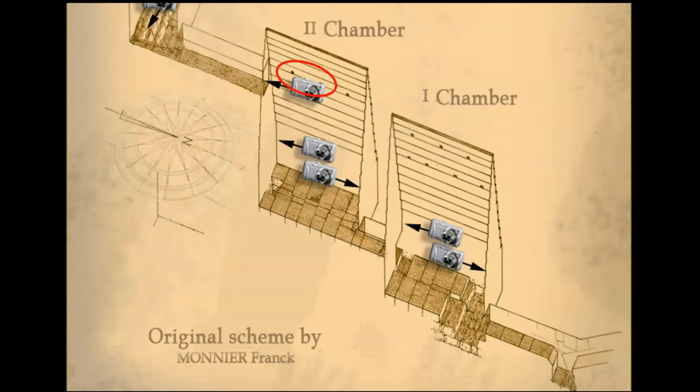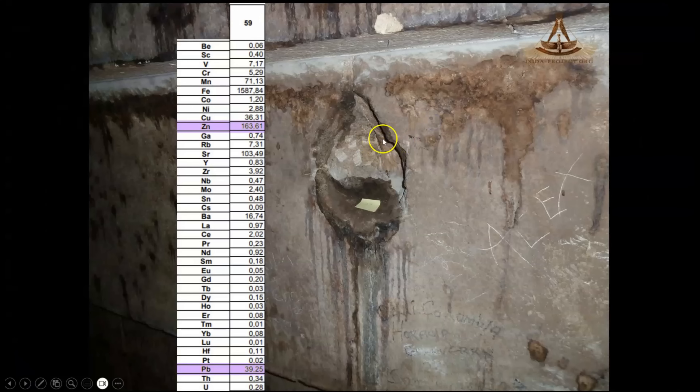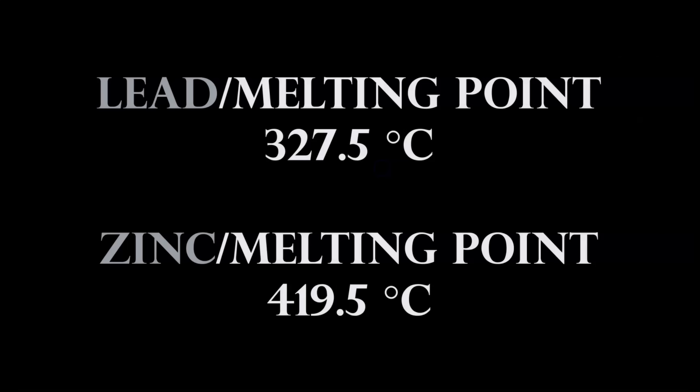In episode 99, high temperature reactions inside the Red Pyramid, I showed the upper southern side of the secondary air reformer — the area displaying the most intense and concentrated staining of the entire system. Sample number 59, taken from the black material inside one of the housings, showed elevated concentrations of lead and zinc, whose melting points are 372 degrees Celsius and 419 degrees Celsius respectively. These perfectly fall in line with the temperature calculations from the previous episode showing operating temperatures around 500 degrees Celsius, well within the operating temperatures that can be sustained by these limestone chambers.